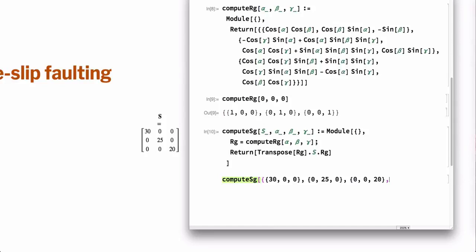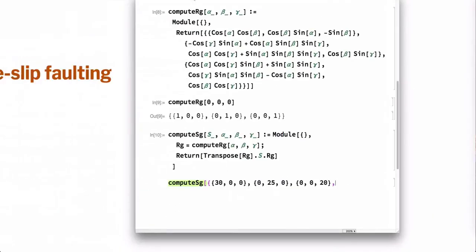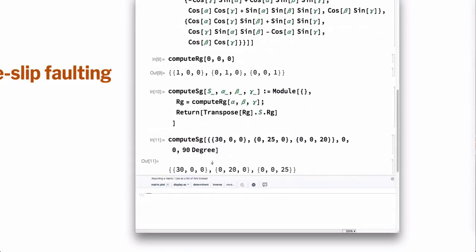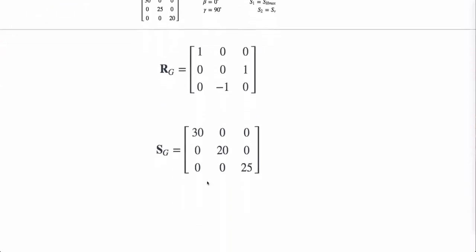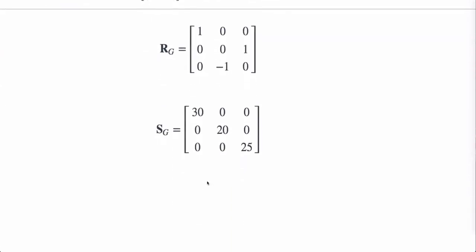And the angles are 0, 0, 90. All right, so there's the result, there's the stress in the geographic frame, this is SG: 30, 20, 25. So let's check the result, 30, 20, 25, okay?